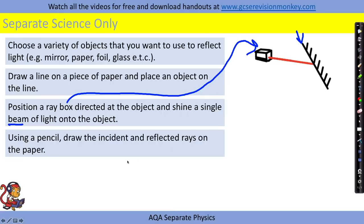Using a pencil, draw the incident ray, which is the ray going in, and the reflected rays on the paper. So you might have something that looks a little bit like this.